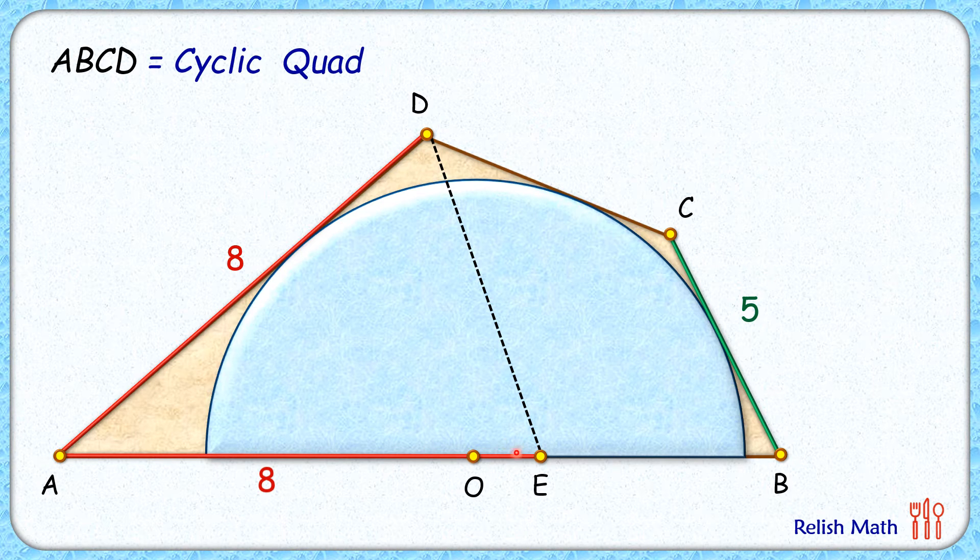If this angle here is alpha degrees, then angle D will be alpha, and by angle sum property this angle will be 180 minus 2 alpha.